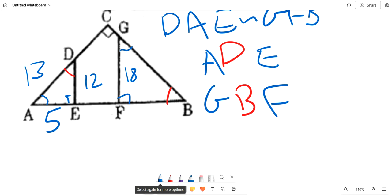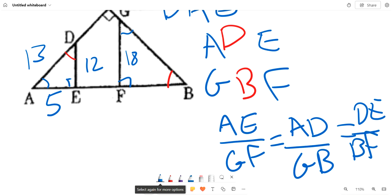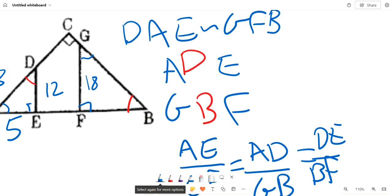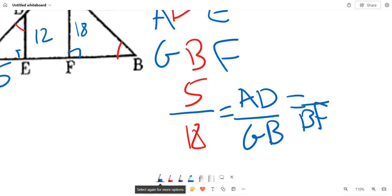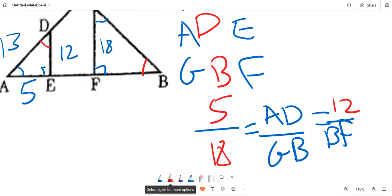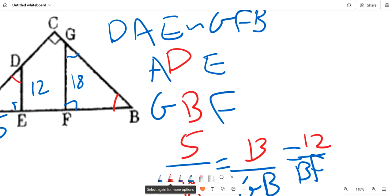Now we know that AE over GF equals AD over GB equals DE over BF. And we can start filling out some of these. For example, AE is 5. We also know that GF is 18. We know that DE is 12. And we also know that AD is 13. And we're trying to find GB here.